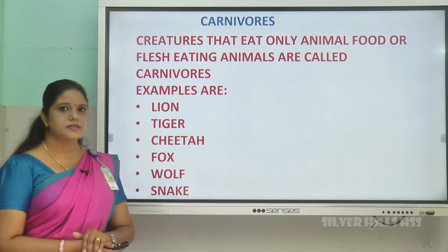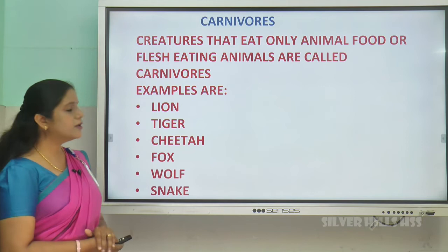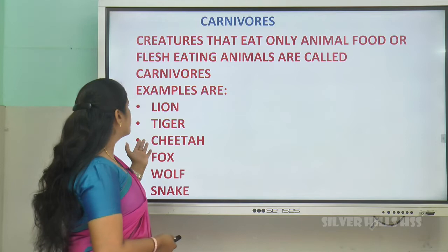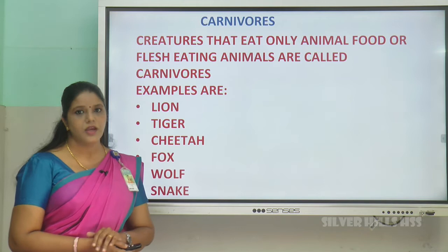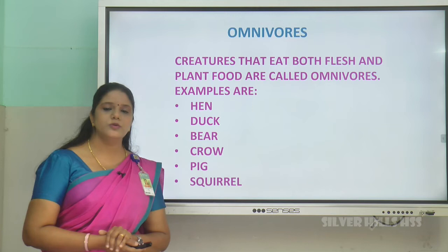Carnivorous — creatures that eat flesh, or flesh-eating animals, are called carnivorous. Examples: lion, tiger, cheetah, fox, wolf, snake, etc. are carnivorous animals.